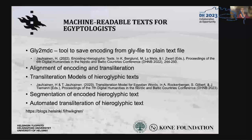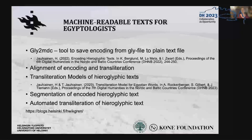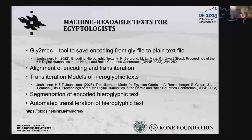In the machine-readable texts for Egyptologists project, the aim is to facilitate the use and production of encoded hieroglyphic texts. We published a tool called GLI2NDC that extracts the encoding from a GLI file and saves it in a simple text file. We also devised a method to align the Ramses corpus encoding and transliteration sentences.